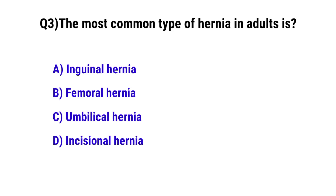Question No. 3: The most common type of hernia in adult age — the correct option is A: inguinal hernia.